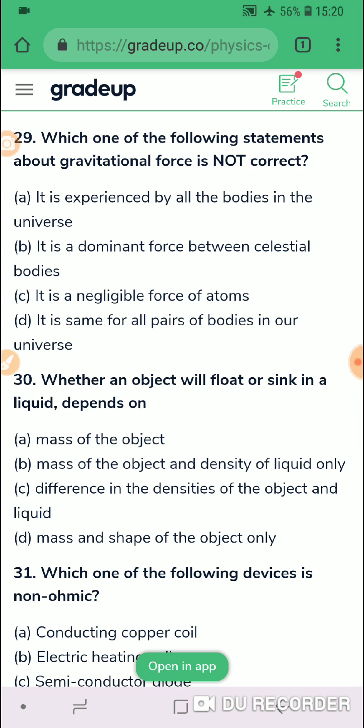Which of the following statement about gravitational force is not correct? They are asking not correct, so gravitational force is dependent upon mass and it is experienced by all bodies in the universe, that is correct. Dominant force between celestial bodies, this is also correct. It is negligible force of atoms because within the atom there are very strong electrostatic force as well as nuclear forces and gravitational force is very small in case of atoms, this is also correct. It is same for all pairs of bodies in our universe, this in my opinion is not correct. So option D is correct because how can it be same, it depends upon the distance, it depends upon their mass, all these things.